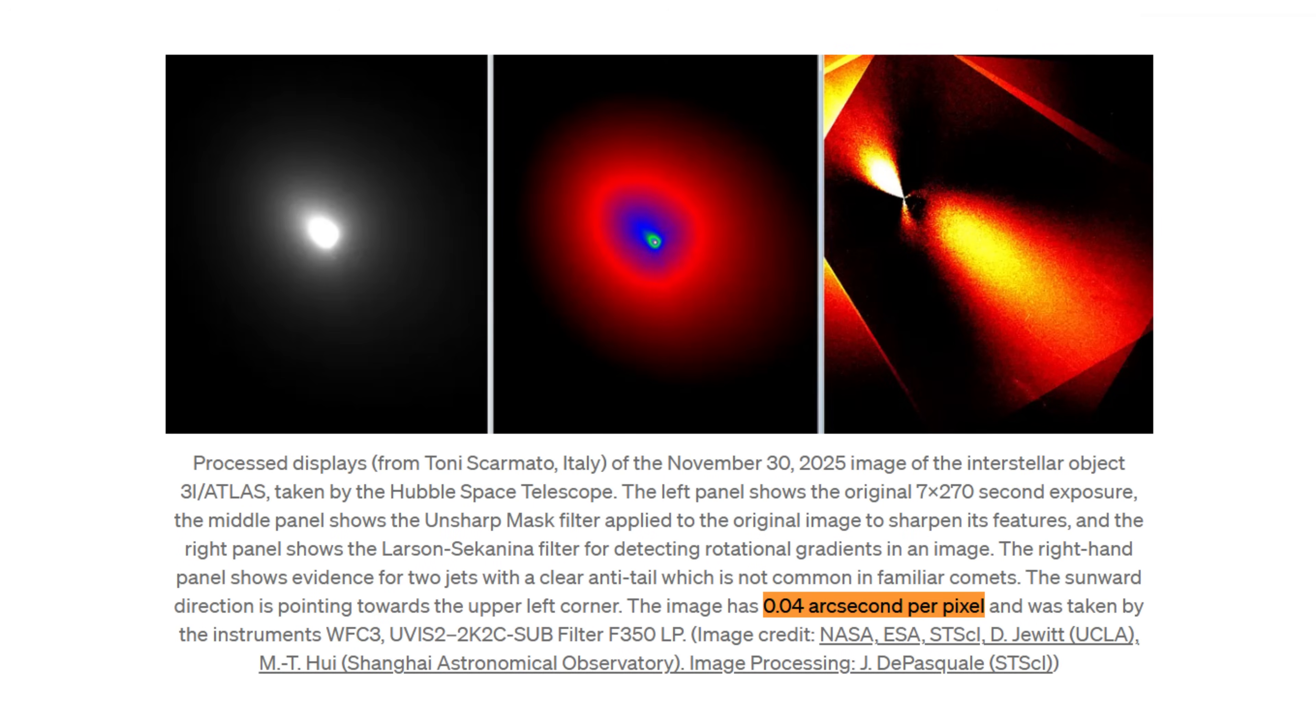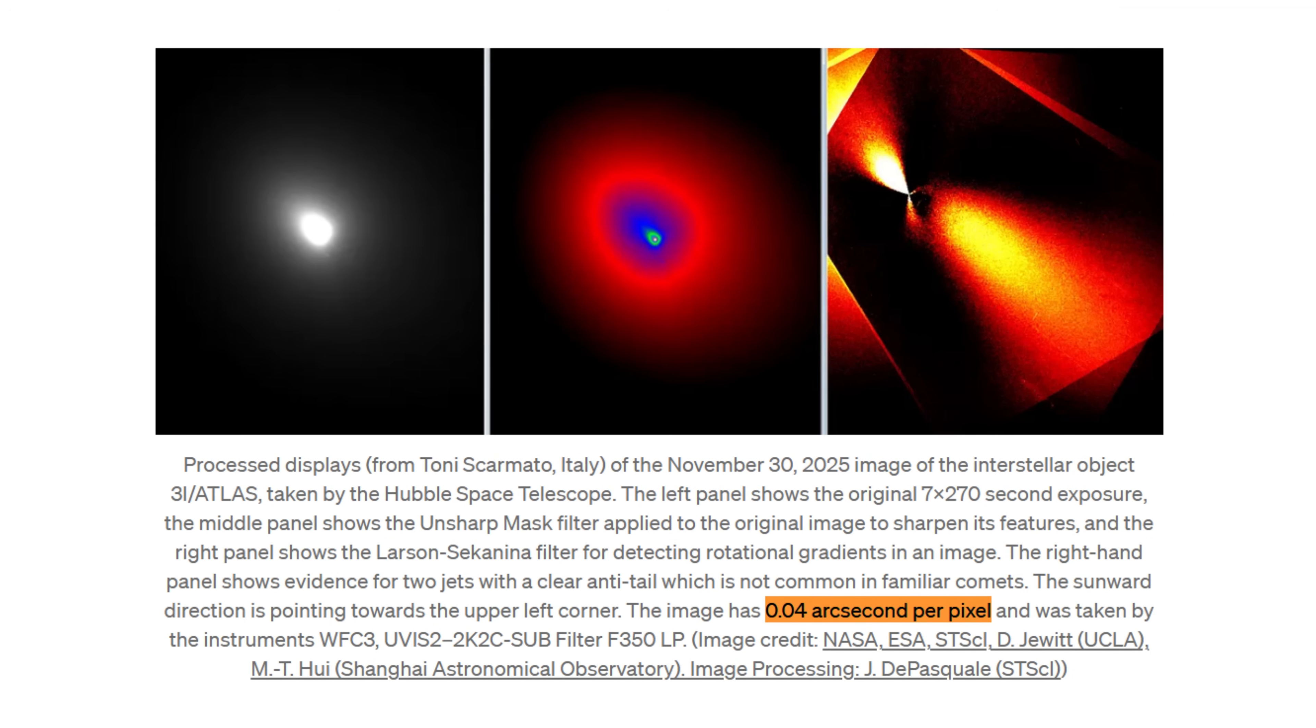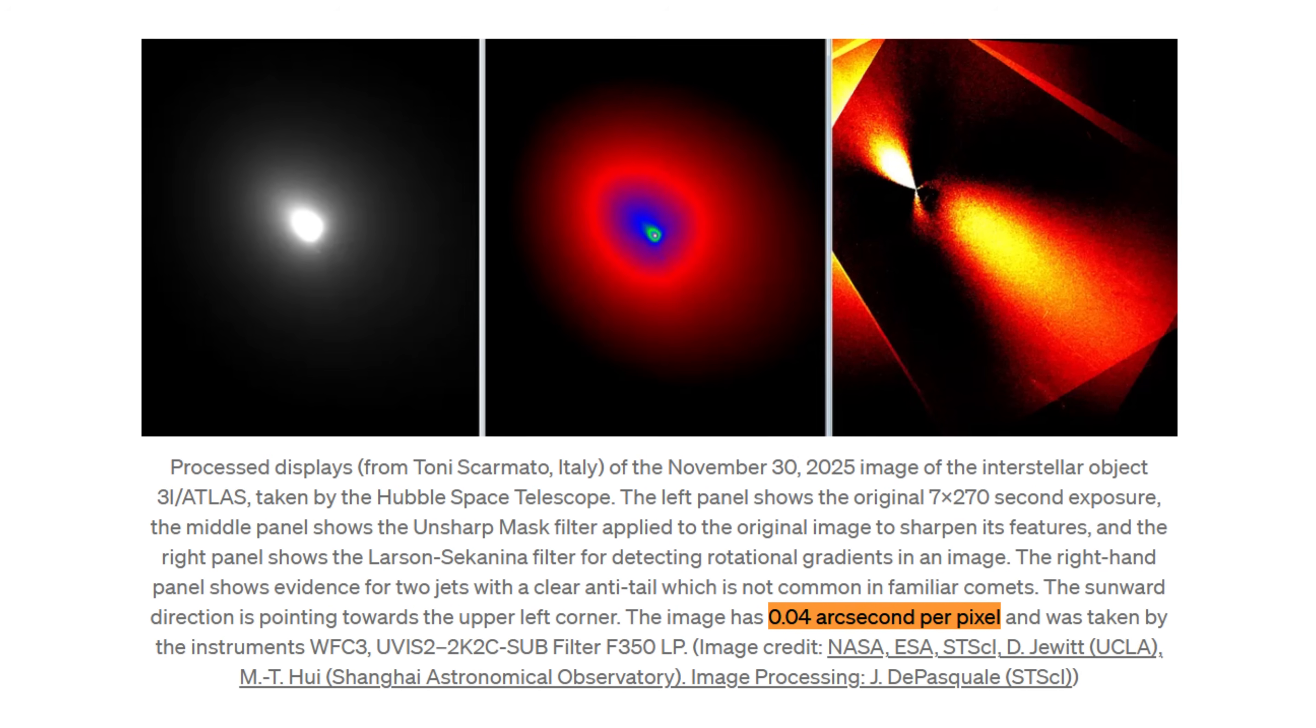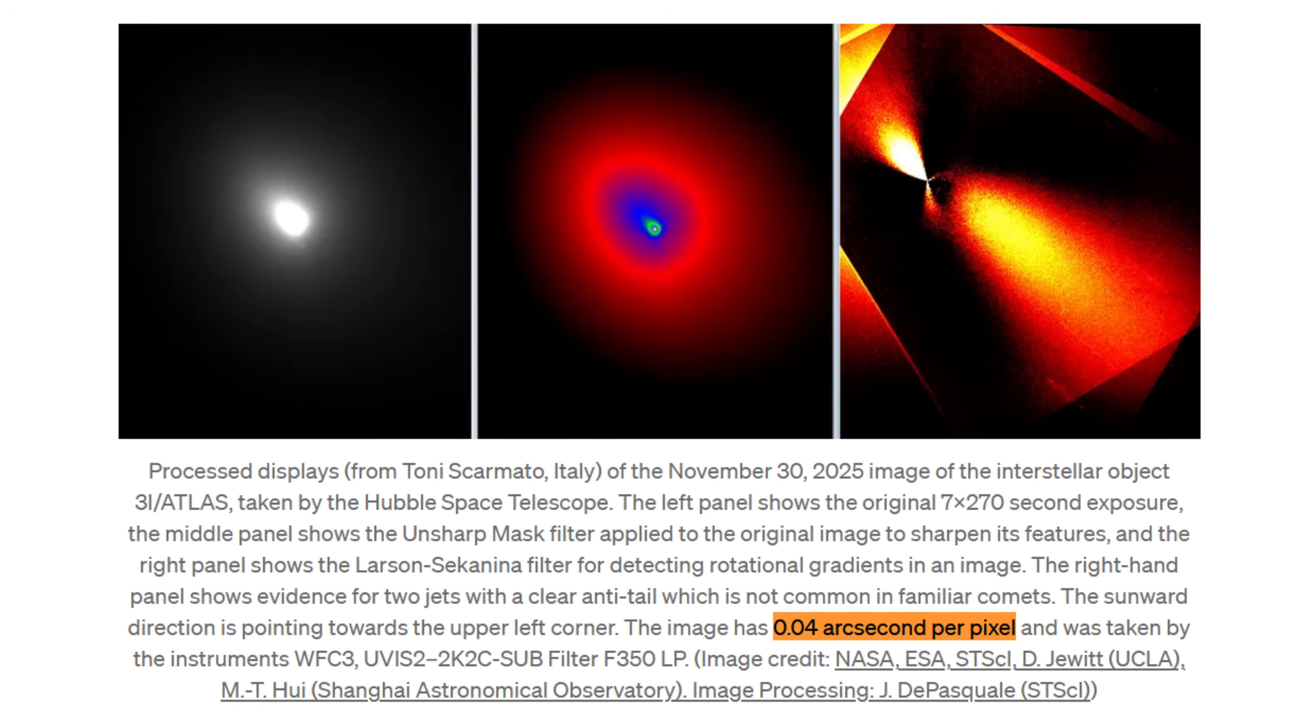Its 0.04 arc-second-per-pixel gradient map revealed two powerful jets and a distinctly teardrop-shaped coma whose brightest region should have been trailing the comet but instead extends in the sunward direction.